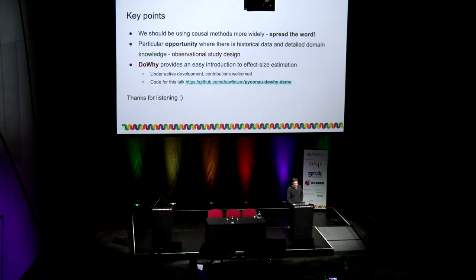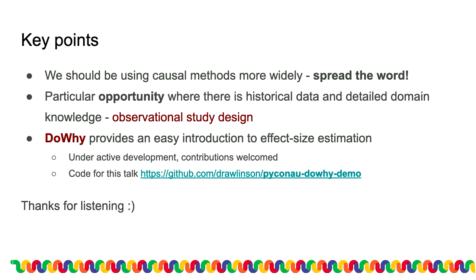That pretty much wraps things up. I hope I've at least made you intrigued about causality and causal inference. I believe that we should be using these methods more widely, discussing them, and thinking about cause and effect explicitly in observational studies. There is a particular opportunity where organisations have a huge amount of historical data and detailed domain knowledge that makes causal inference very accessible. If you're thinking about doing causal inference, then I recommend DoWhy — it's under active development, it's easy to use, and the code for this talk is available in the link shown. Thanks for listening.